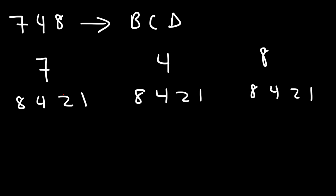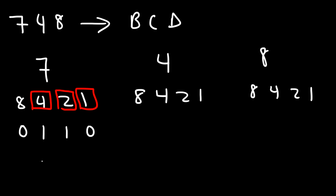7 is the sum of 4, 2, and 1. So let's replace those digits with a 1, and put a 0 for the 8 position. So 0111 corresponds to 7.